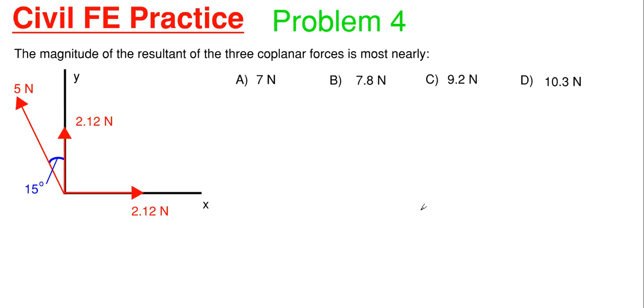So this will be our fourth part in the Civil FE practice series. What we have going on here is that the magnitude of the resultant of the three coplanar forces is most nearly one of these four options where we have our forces laid out in our XY coordinate system as shown.